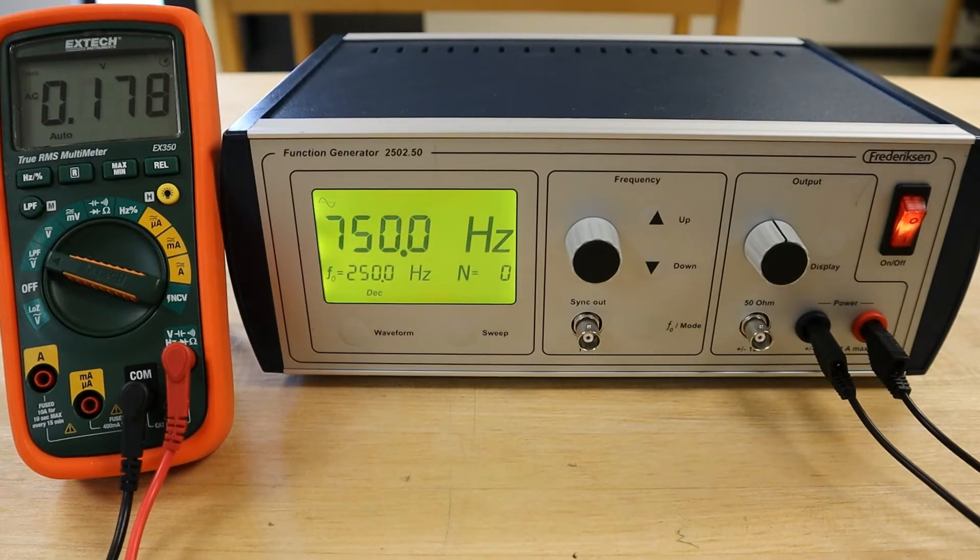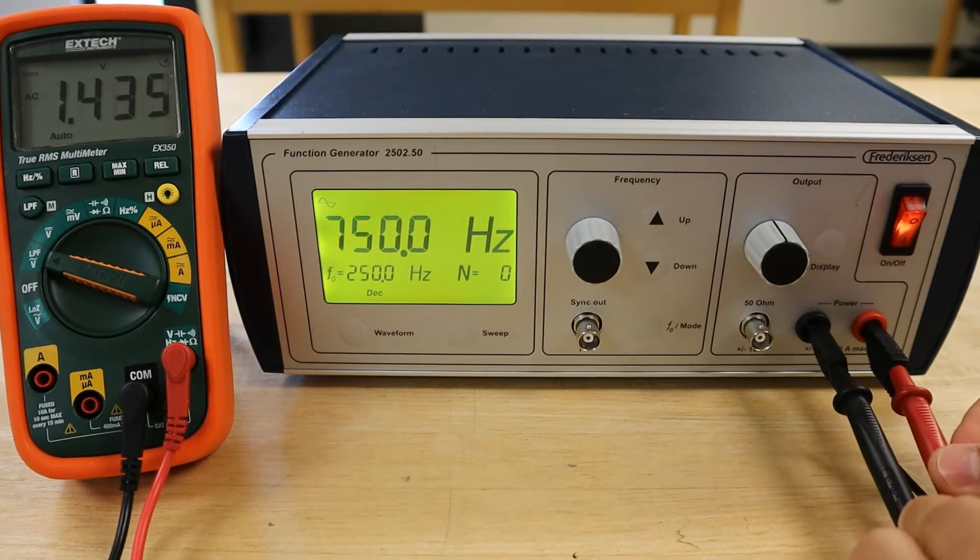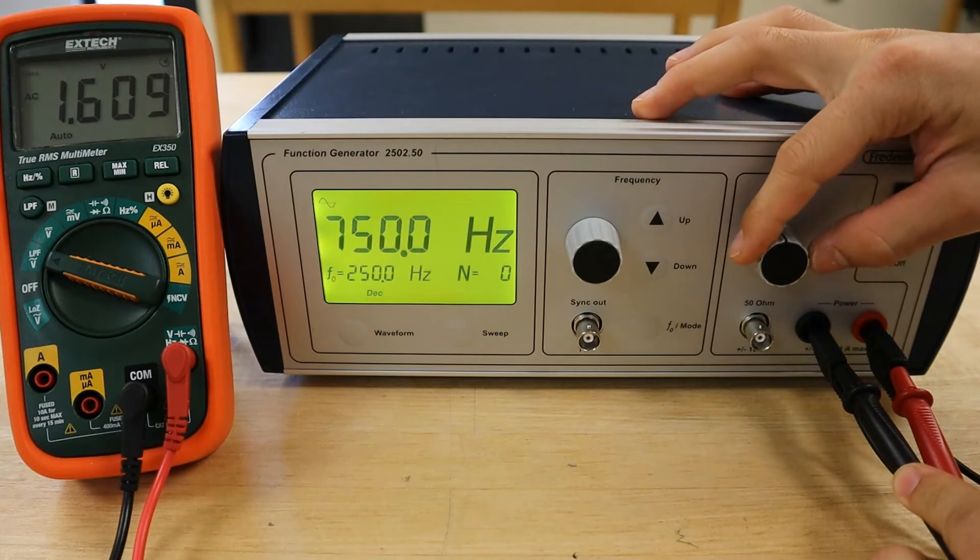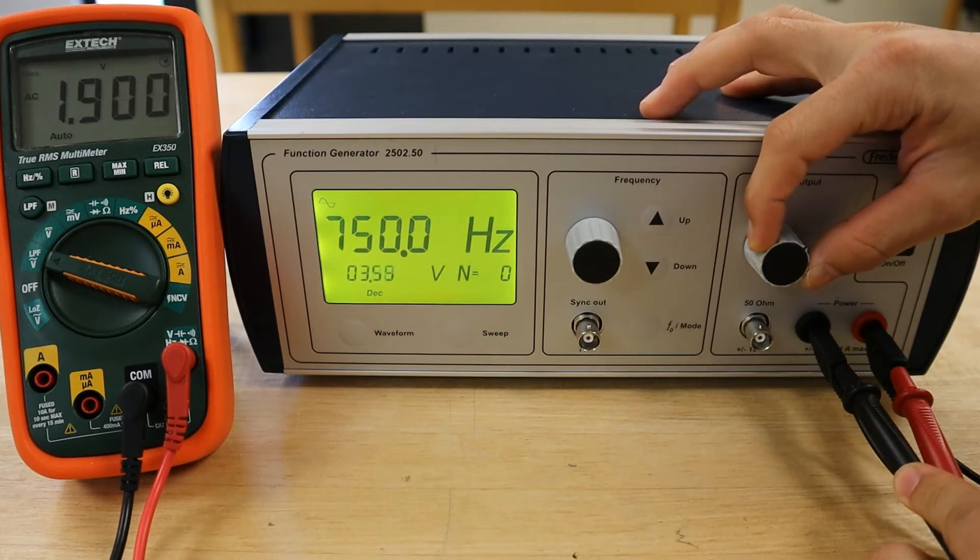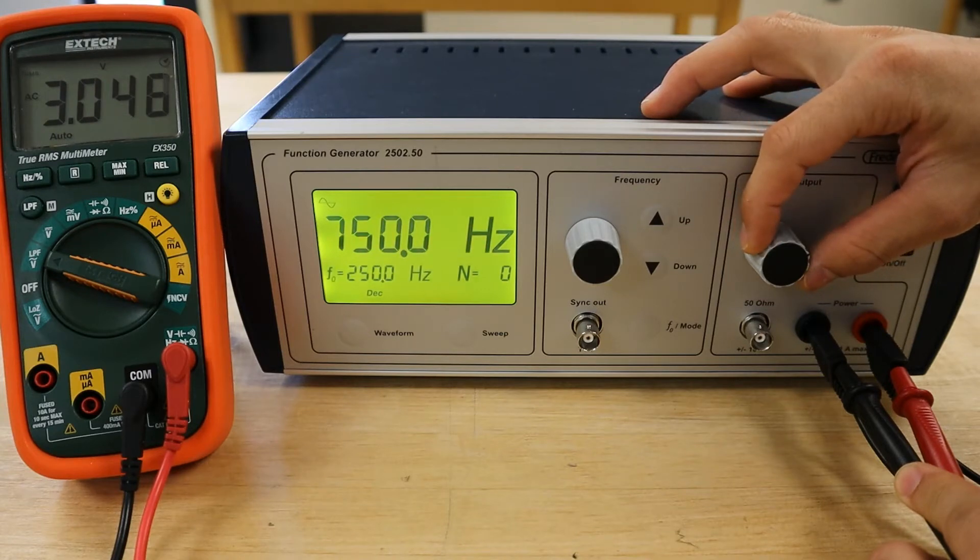We will set the amplitude of the function generator by using the DMM to probe the RMS voltage of the generator. The function generator should be adjusted so that the voltage is as close to 3 volts as possible.